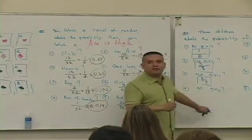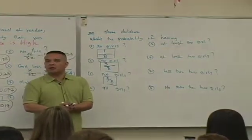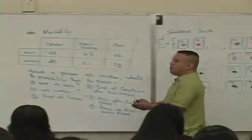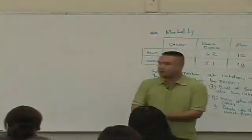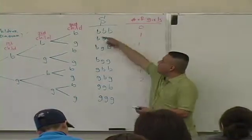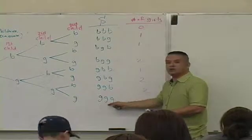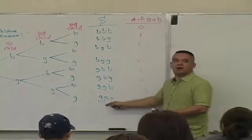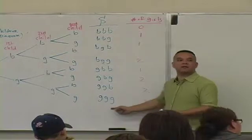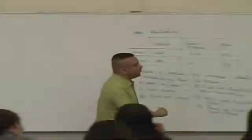All girls. What does it mean to have all girls when you have three children? G, G, G. Having all girls is the same as having three girls. So how many outcomes consist of having all girls? One. So it's also one over eight.